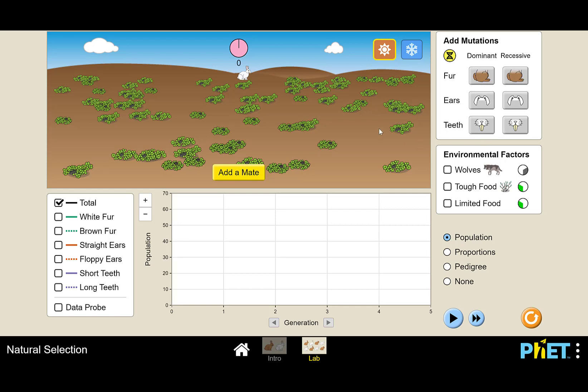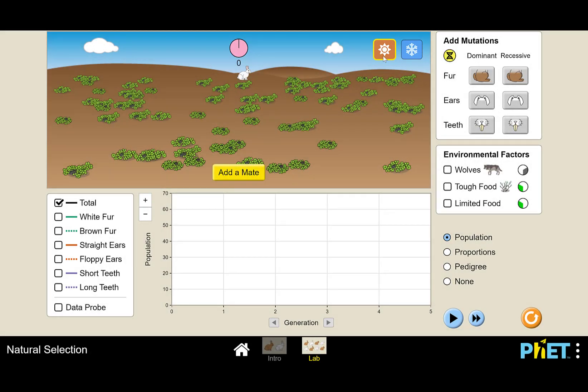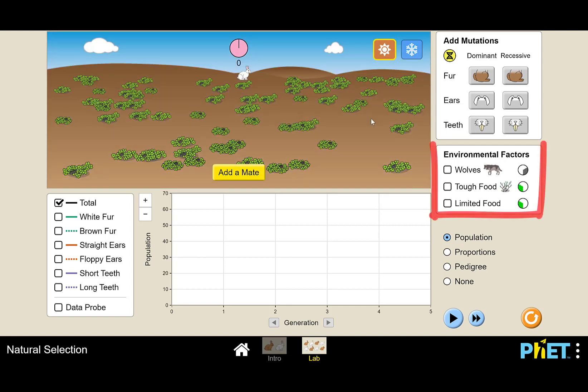There are two main environmental controls that you have in the simulation. First is just the general overall location. Here the bunny is in the equator, but if we click on the snowflake, we can change the overall location to the Arctic. And in the general, in the overall location, we can make a change to that immediate environment. And your choices are to bring wolves in, change the food supply so that it's more difficult to eat, or change the food supply so that there are limited amounts.